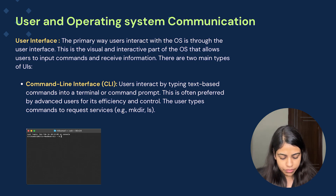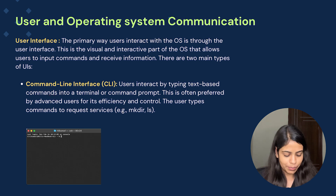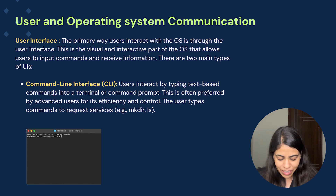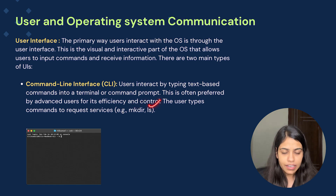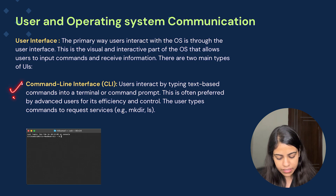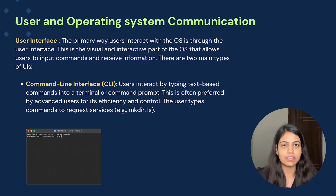What is the command line interface? The user interacts by typing text-based commands into a terminal or command prompt. Here you can see a terminal where the user can provide text-based commands according to their requirements. This is often preferred by advanced users for efficiency and control. The user types commands to request services — like mkdir to make a directory, or ls to show all the folders or files present in a particular folder. Via the command line interface, the user can access the operating system, access files, make modifications, and save files.